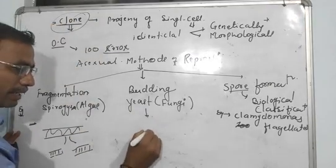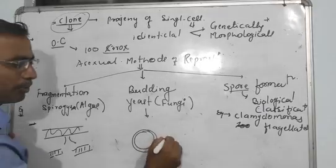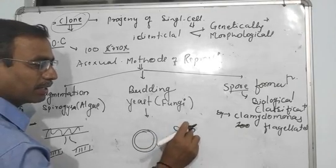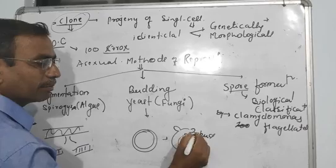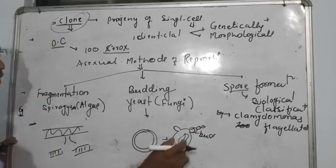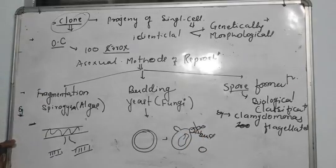Yeast budding - body produces bud, and this bud grows. These cells grow, mature, they get detached, and form yeast.